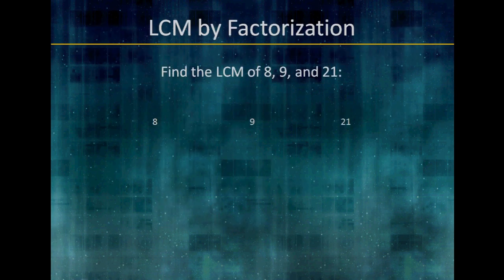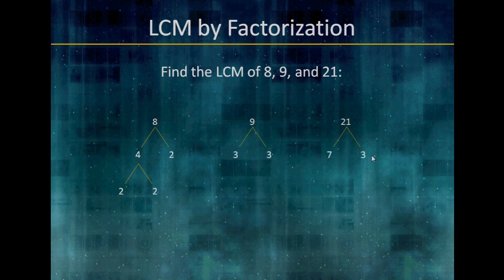One way to find LCM is by factorization. Let's say we want to find the LCM of 8, 9, and 21. First, we factor 8: 8 equals 4 times 2, and 4 equals 2 times 2. This is the factorization of 8. 9 equals 3 times 3. 21 equals 7 times 3. If you notice, at the end of all these branches, it is a prime number.